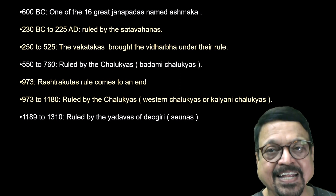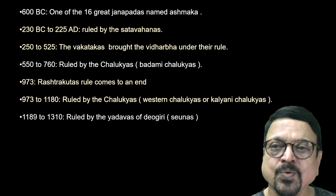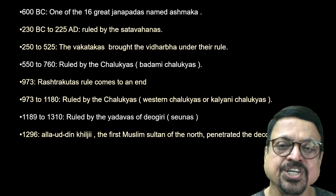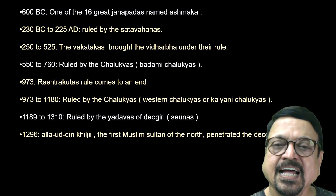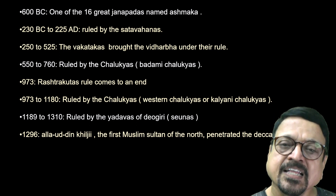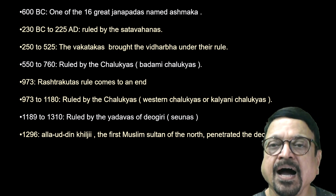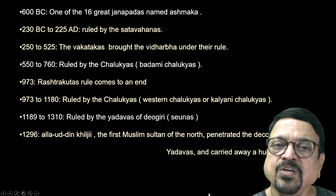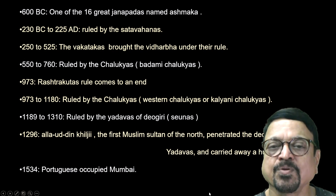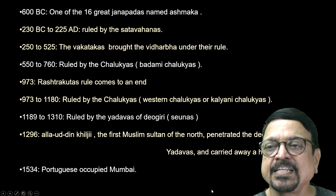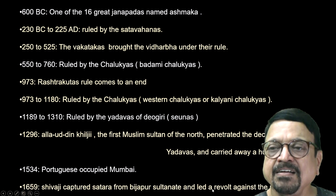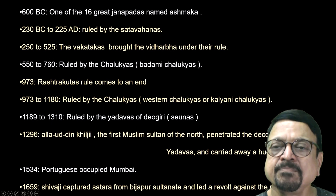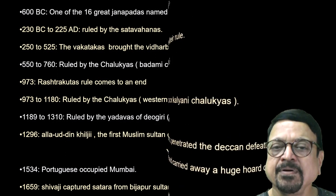From 1189 to 1310, it was ruled by Yadavas of Devgiri, with the capital at Devgiri. In 1296, Alauddin Khilji defeated the Yadavas and took Devgiri and Aurangabad, and it became part of the Muslim Sultanate from Delhi up to here. Devgiri was at that time considered one of the richest empires. In 1534, the Portuguese occupied Bombay — Mumbai. In 1659, Chhatrapati Shivaji Maharaj captured Surat, and certain parts of Konkan and around Mumbai again became part of the Maratha dynasty.